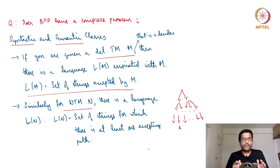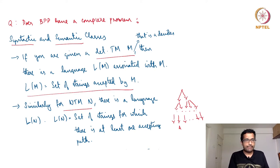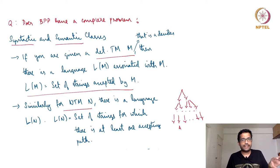Suppose you have a deterministic polynomial time Turing machine — I am only talking about deciders. Then there is naturally a class of languages that it accepts and everything else it rejects. So there is a language L_M; all the strings in L_M it accepts and all the strings not in L_M it rejects. Given the machine M, it is a deterministic decider, there is a set of strings that it accepts — that set is the language decided by this Turing machine.